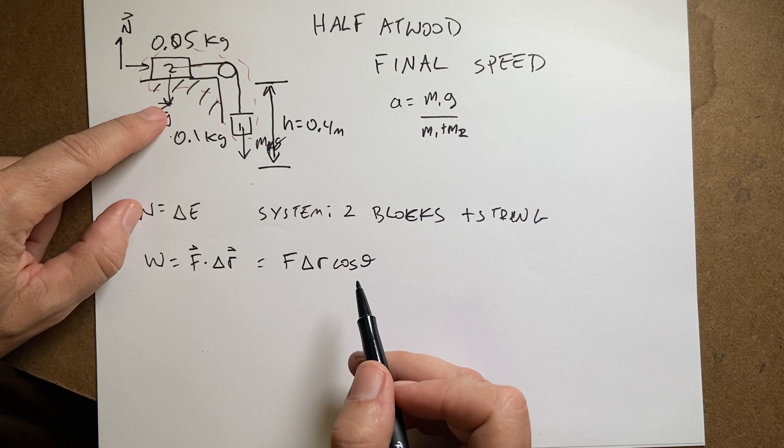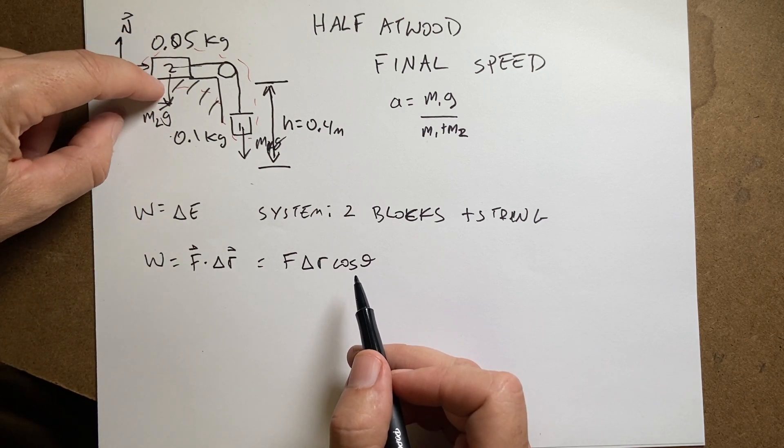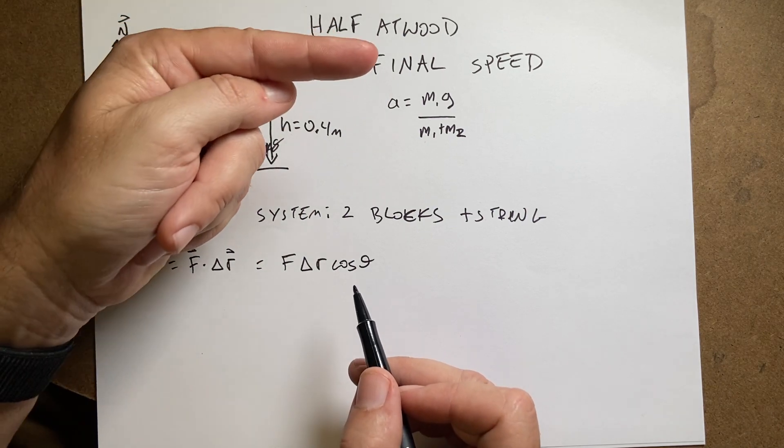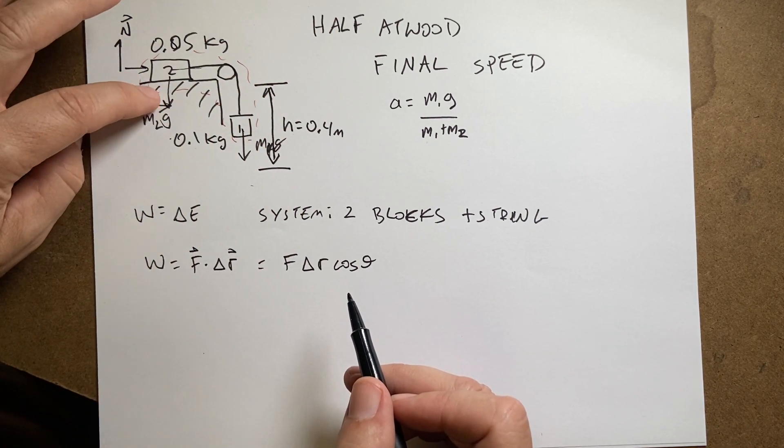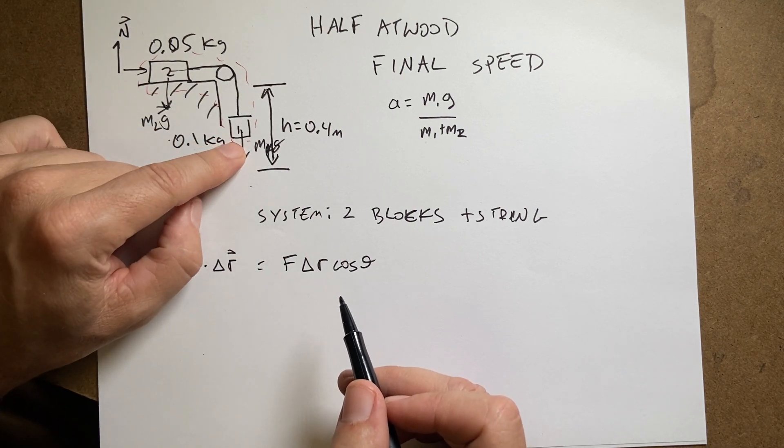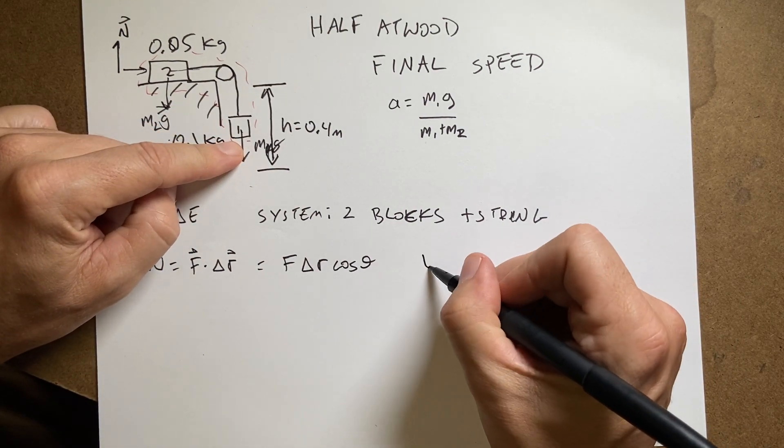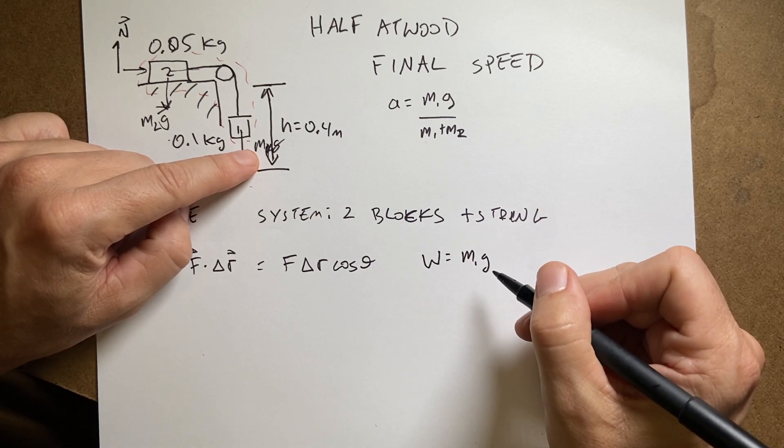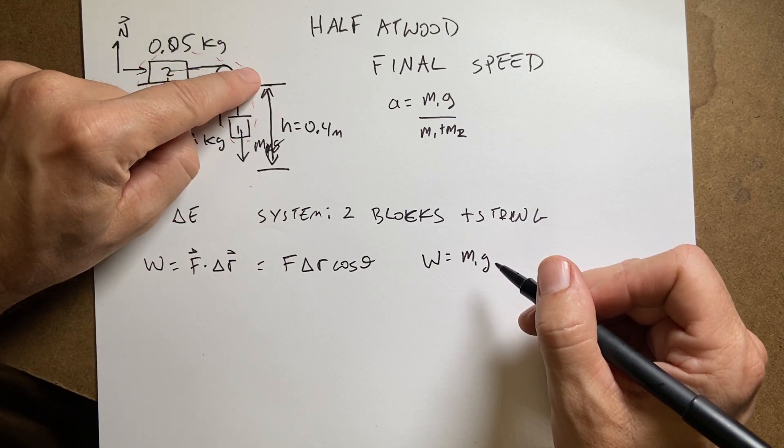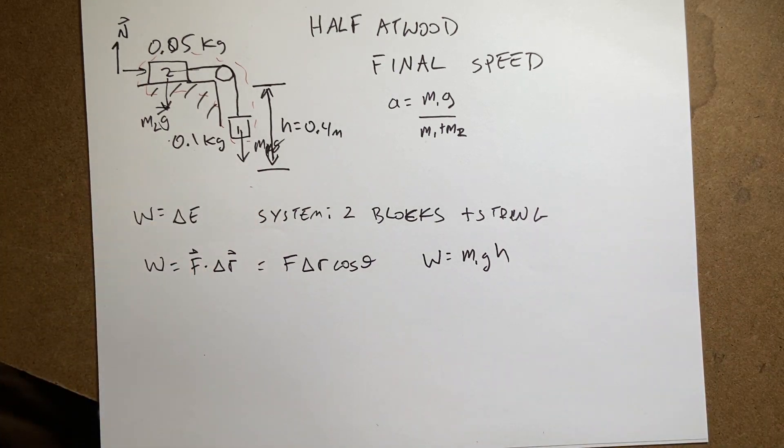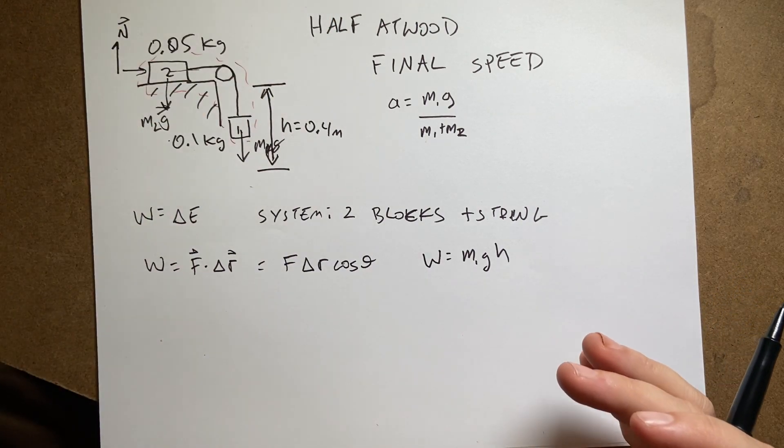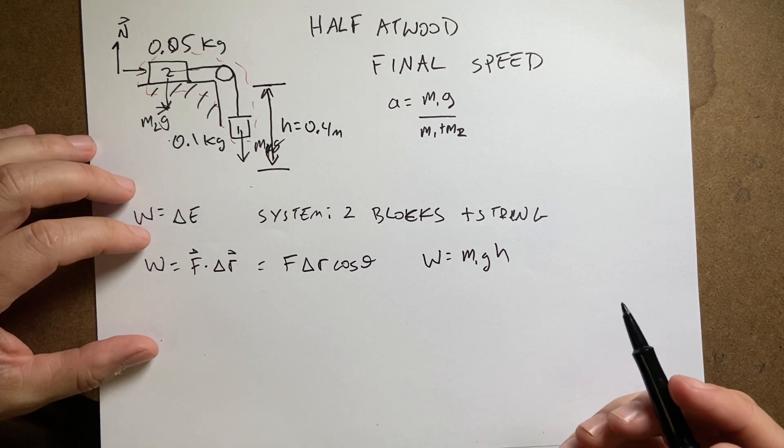And the same thing is true for the gravitational force on m2. The gravitational force is down, it's moving this way, the angle is 90 degrees. So these two do 0 work. That means I'm just left with this. So the work is going to be equal to the force, m1g, times the displacement. How far does it move? I'm going to say the distance is h. So I'm going to say the work done on the system is positive because it's increasing the energy of the system.